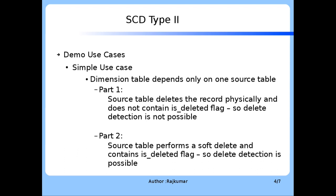So, what are the demo use cases which we are going to cover as part of this demo? This segment has been classified into two sections based on the complexities involved. The first session on demo would be a simple use case where the dimension table depends only on one source table. This is further divided into two parts. The first part being the source table is deleted with the record physically. Remember, this is not a soft delete, so delete detection is not possible in this case and we will see how and why.